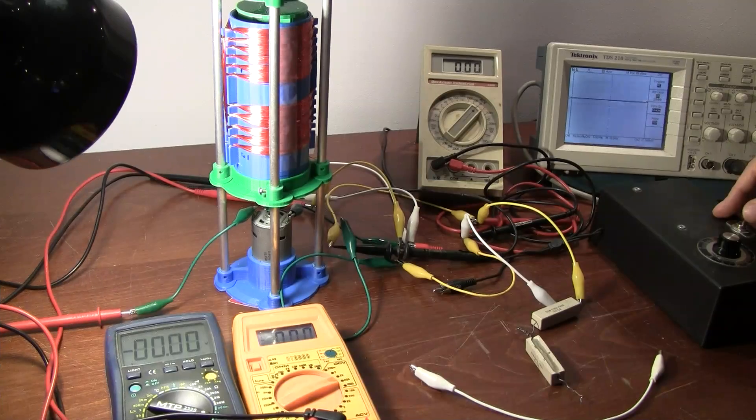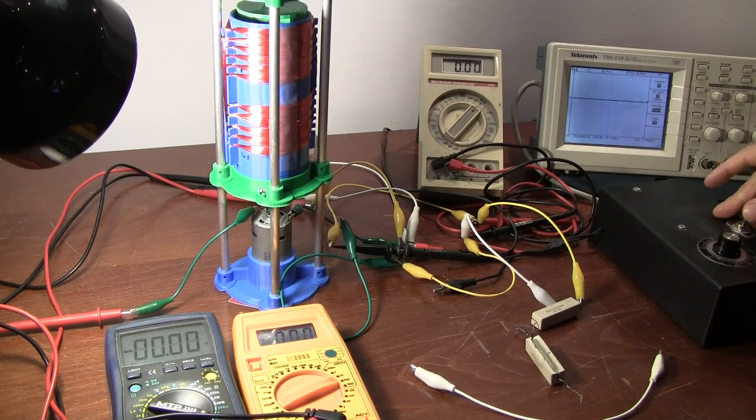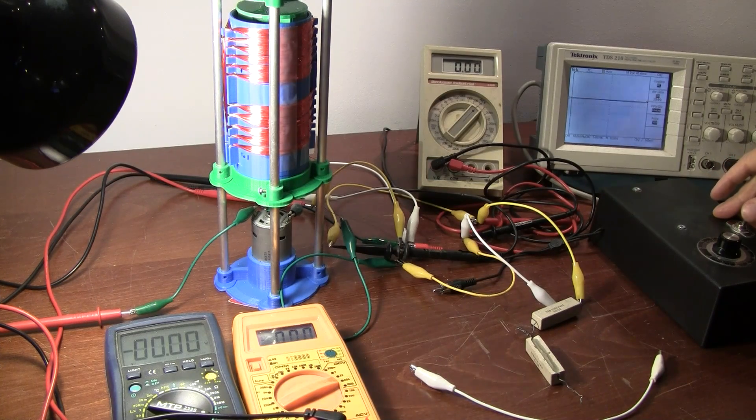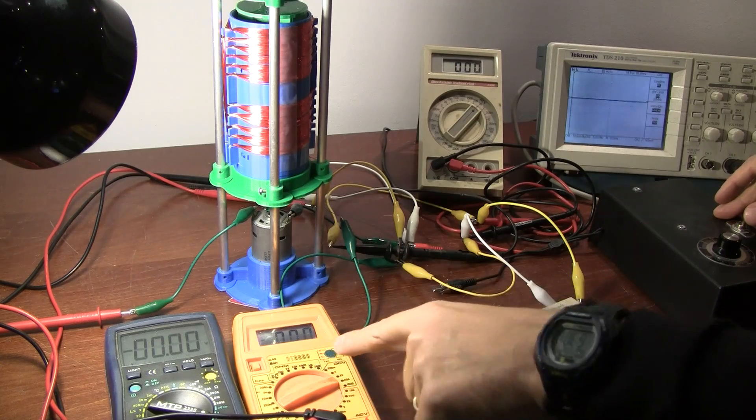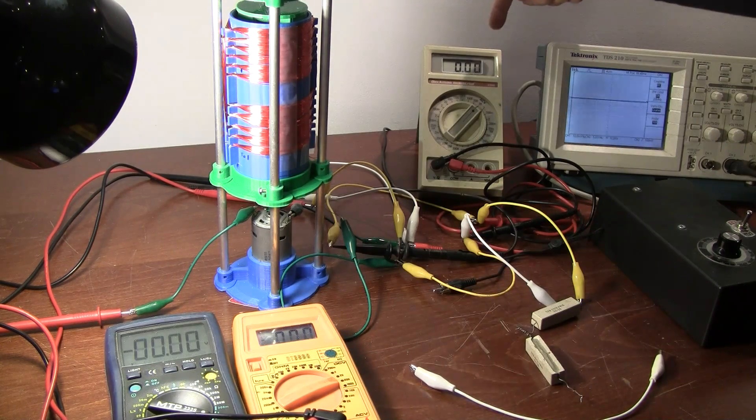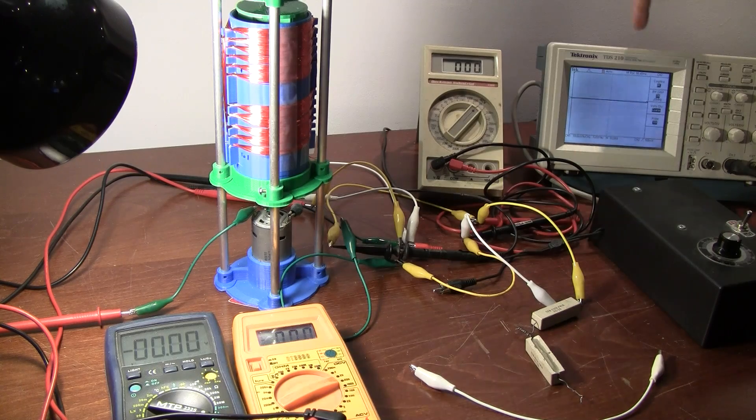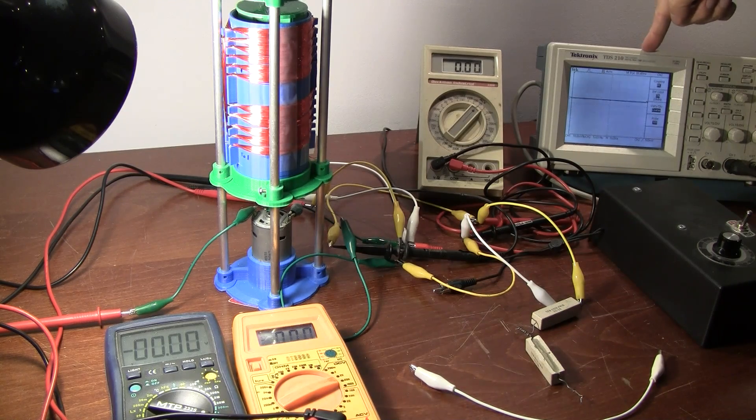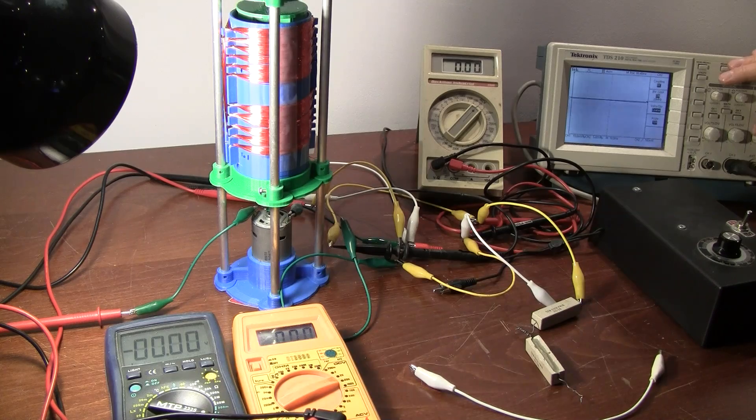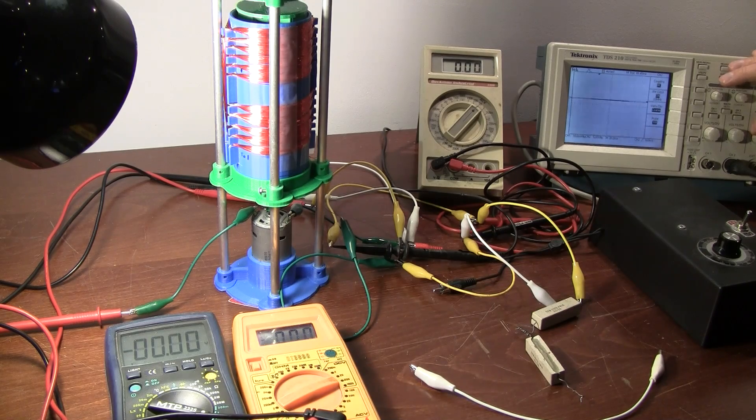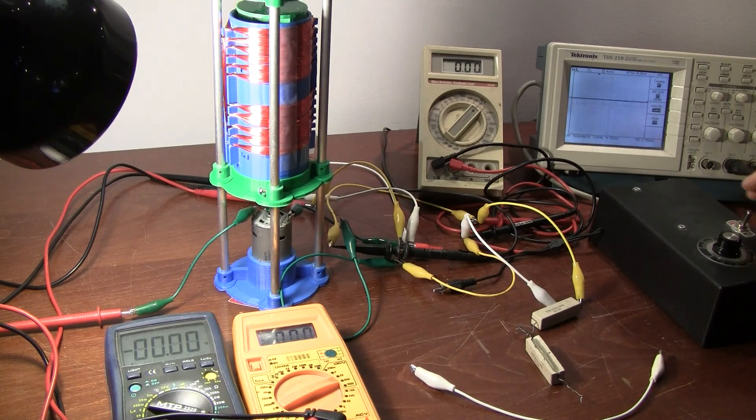It's the Marinov motor generator setup and we've got our input voltage and current on these meters, our output RMS voltage here, peak to peak voltage here. This also gives us our cycles. It's on 50 milliseconds per division.